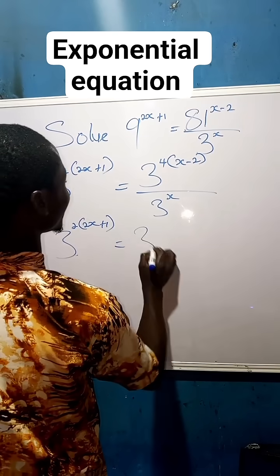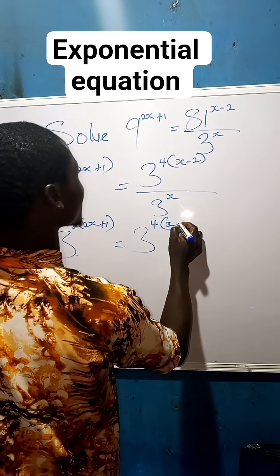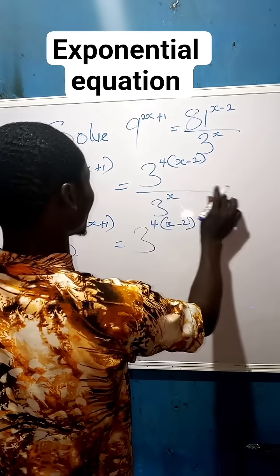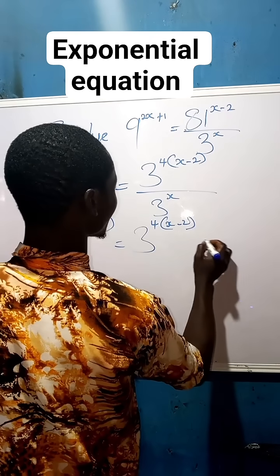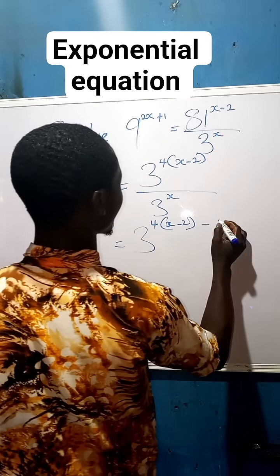...we can equally make it to be 3 raised to the power of 4 times (x minus 2). Then this division will become minus, so we have minus x.